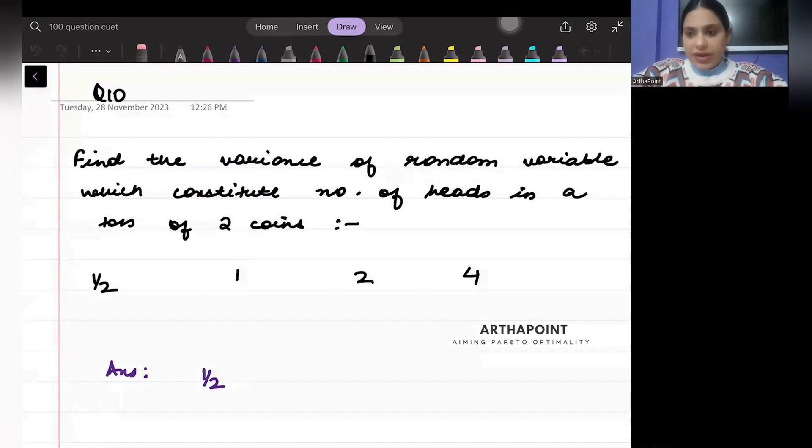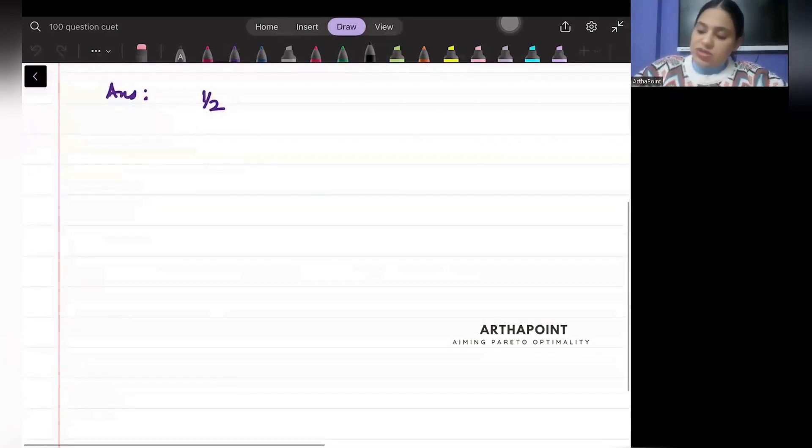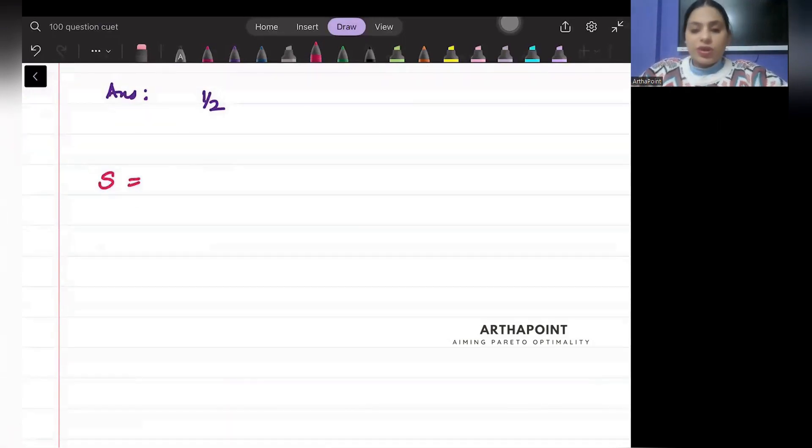Find the variance of a random variable which constitutes the number of heads in two tosses of a coin. So let's try to solve this. When I toss the coin twice, beta, what will be my sample space? I can get head-head, head-tail, tail-head, tail-tail.